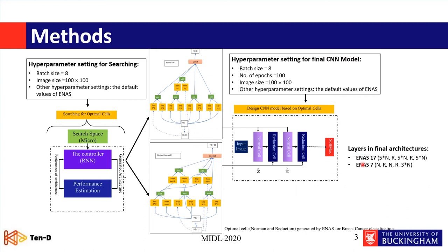By stacking these cells, we designed two architectures: ENAS-17 and ENAS-7. ENAS-17 consists of 17 cells or 17 layers — five normal cells and one reduction cell, and so on. The ENAS-7 consists of seven cells. We trained both architectures from scratch.